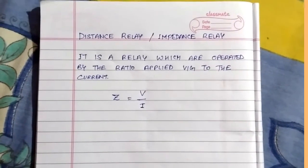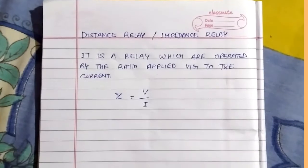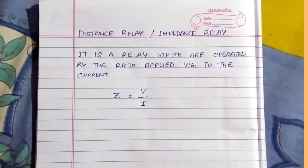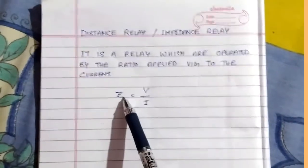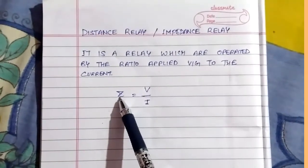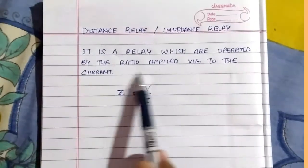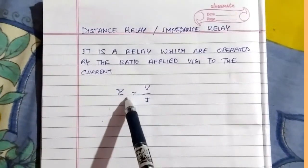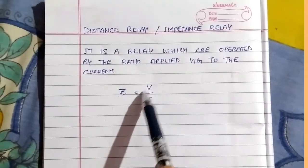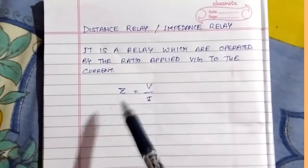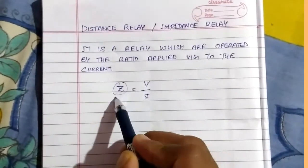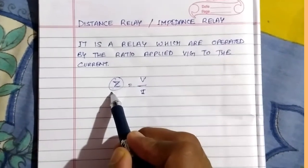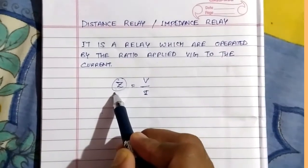Today we will discuss the distance relay, which is also known as the impedance relay. It basically works on the principle of change in the impedance of the line — it is a relay which operates on the ratio of applied voltage to current, that is impedance V by I. If this impedance changes, the relay will activate the tripping mechanism of the circuit breaker.